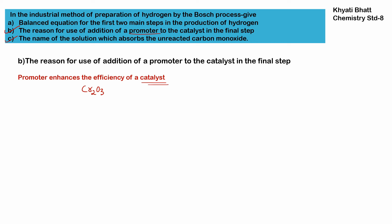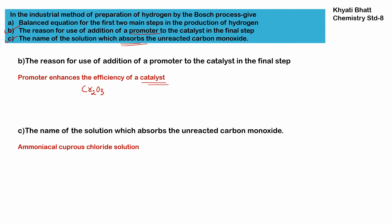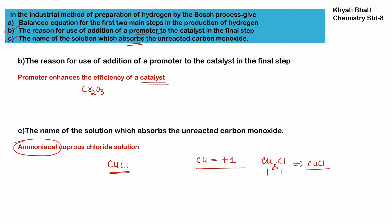For question C — the solution that absorbs unreacted carbon monoxide: to get pure hydrogen gas we must remove both CO₂ and CO. To remove carbon monoxide, we use ammoniacal cuprous chloride solution. Cuprous chloride is CuCl, where copper has a valency of plus one — using the criss-cross method with valency one and one we get CuCl. When it is CuCl₂ it is cupric chloride. Adding ammonia gives us ammoniacal cuprous chloride.